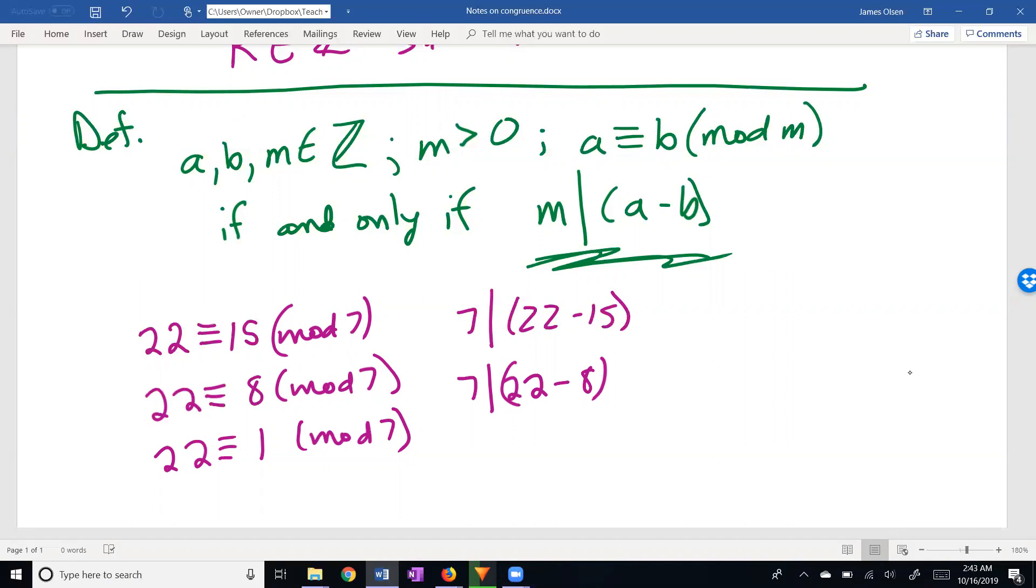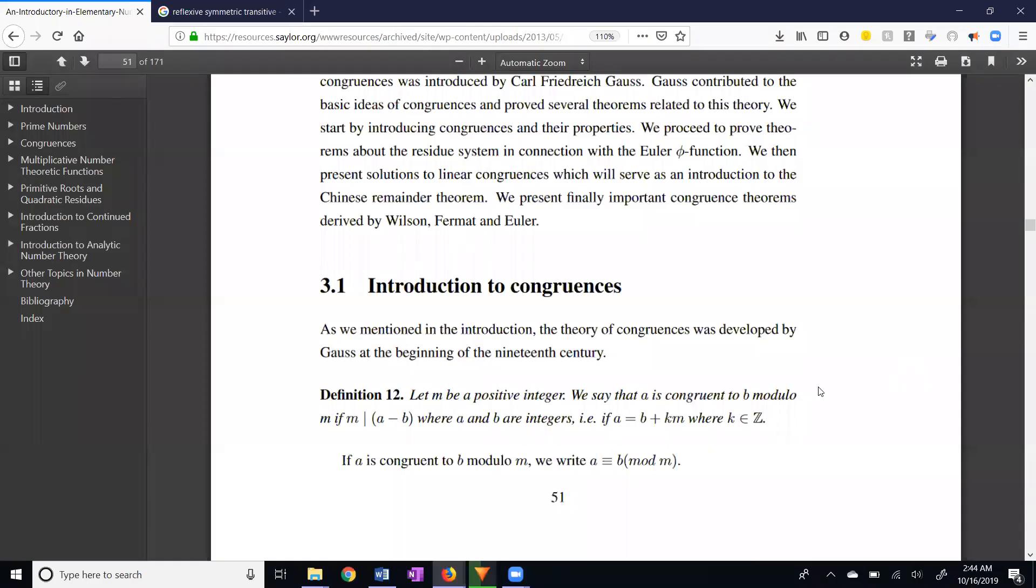One more example. Let's do mod 13. 41 is congruent to 2 mod 13, and the reason this is true is because 13 divides 41 minus 2. And this is true because 13 divides evenly into 39. All right, so let's return to our textbook.